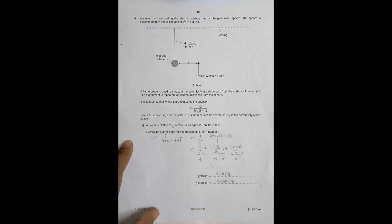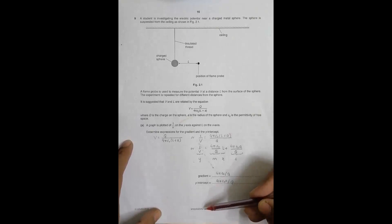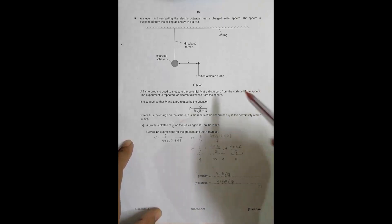Hello folks, today I am dealing with a Paper 5 question. I gave this question to some students in a college and this is the mark scheme for them, also a video for YouTube. This belongs to 2008 October/November Paper 53 and the question number is 2 — it is number 9 in the test but in the exam it's always number 2. It says a student is investigating the electric potential near a charged metal sphere.